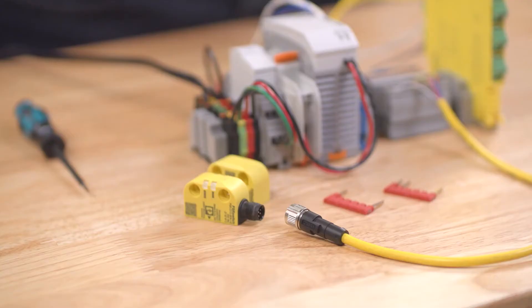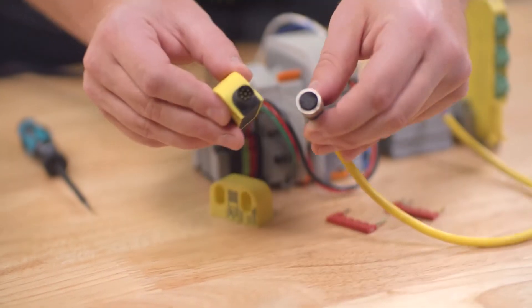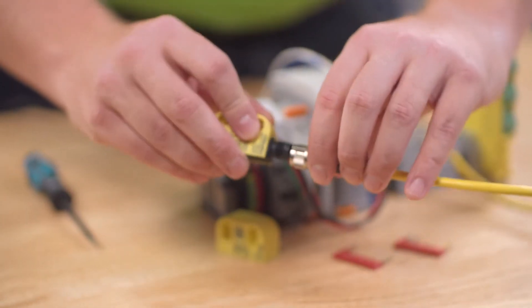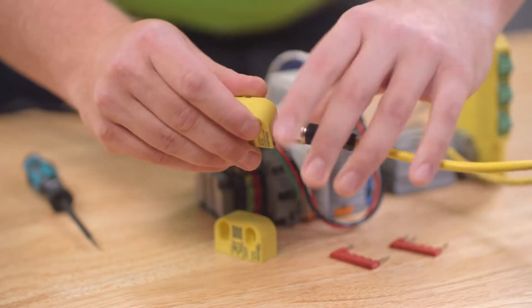The first step is to connect the PSR switch sensor to the M12 female connector. Just line up the coding notch and screw in.